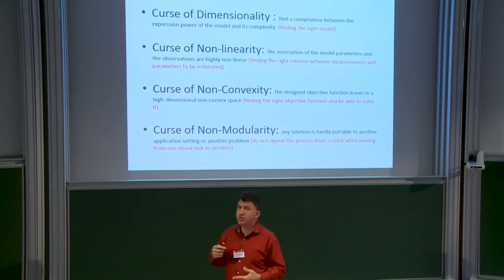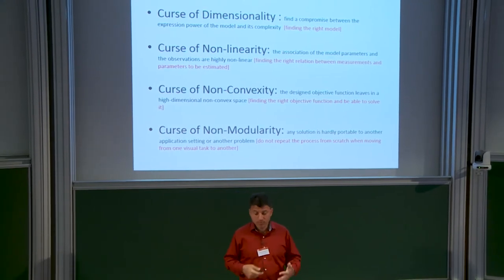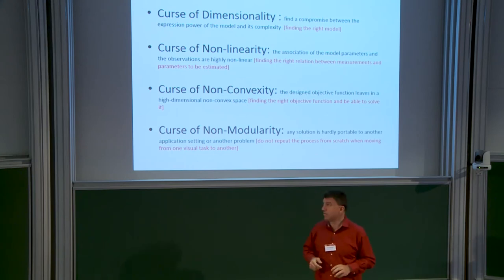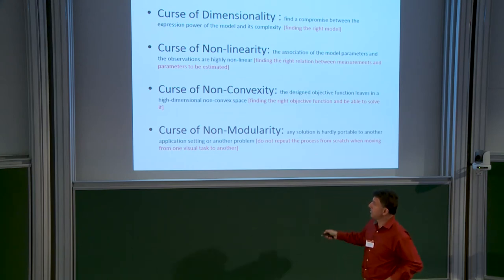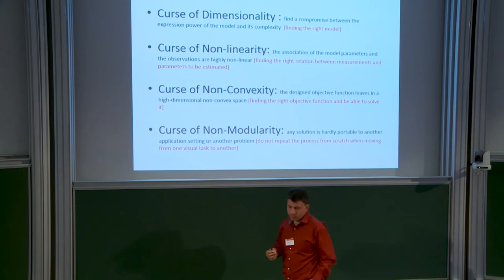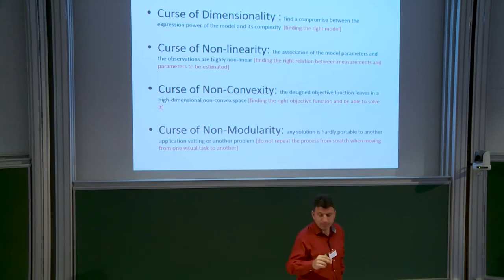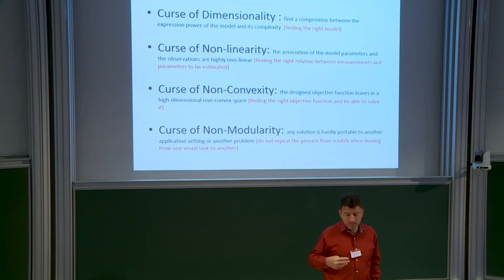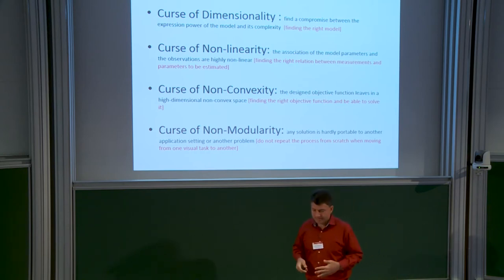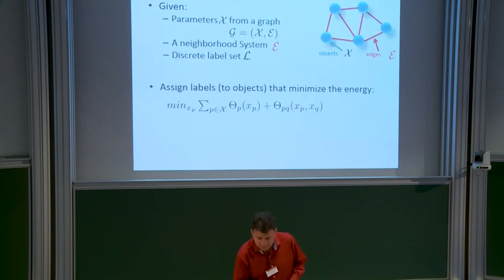A non-optimal solution means you're not solving the problem appropriately — just finding a local solution. The fourth challenge is non-modularity: if you design a cost function for a specific problem, progress made is likely not applicable to another problem. That's one reason deep neural networks are very successful — once you have a pipeline with simple optimization, you just change the network and keep applying it.